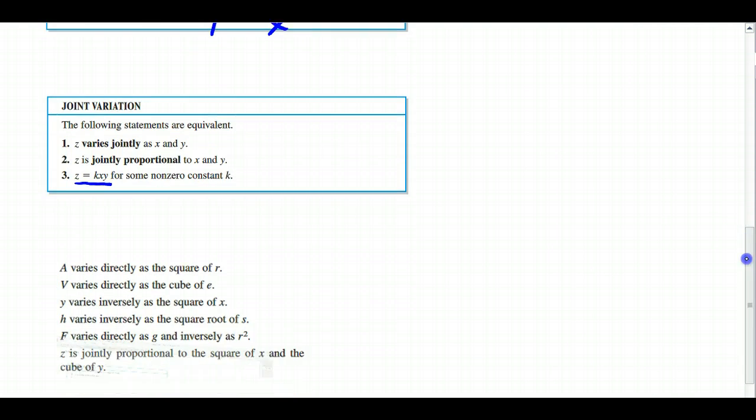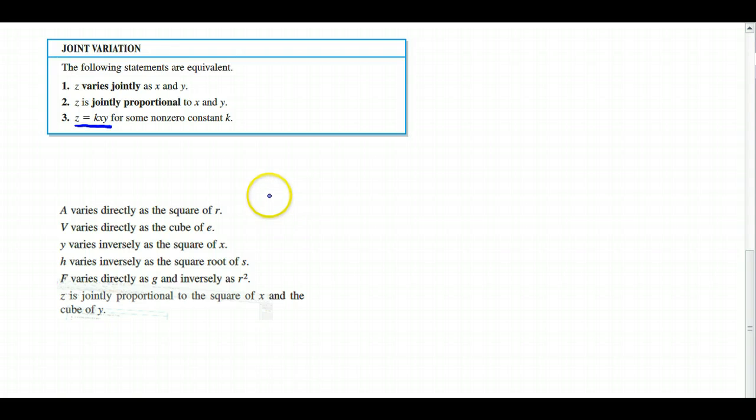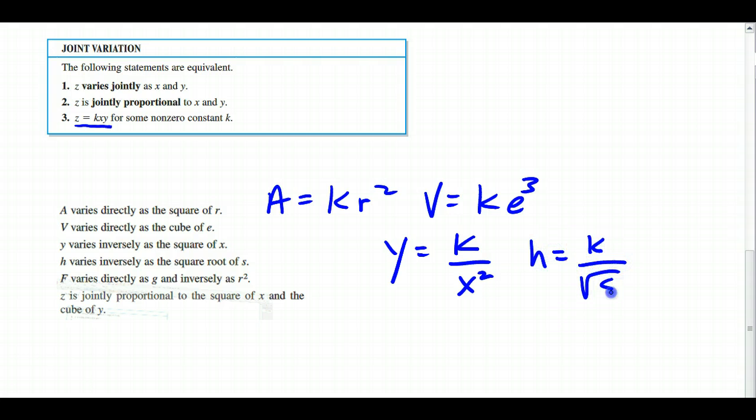So let's do some examples here. If I want to write 'A varies directly as the square of R' as a mathematical model, I would say A equals K R squared. V varies directly as the cube of E: V equals K E cubed. Y varies inversely as the square of X: Y equals K over X squared. H varies inversely as the square root of S: H equals K divided by the square root of S. F varies directly as G and inversely as R squared: F equals K times G divided by R squared. And finally, Z is jointly proportional to the square of X and the cube of Y: Z equals K times X squared Y cubed.